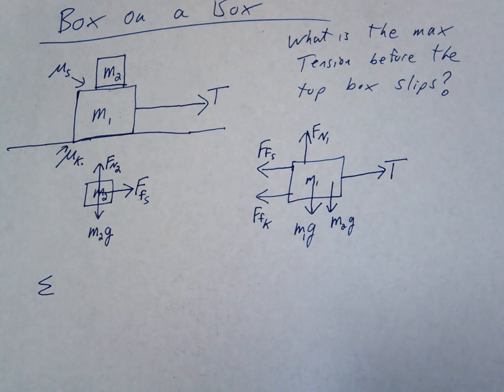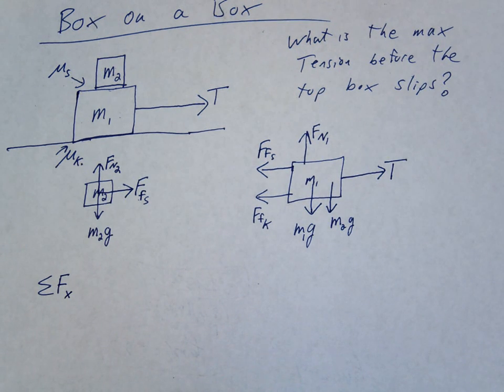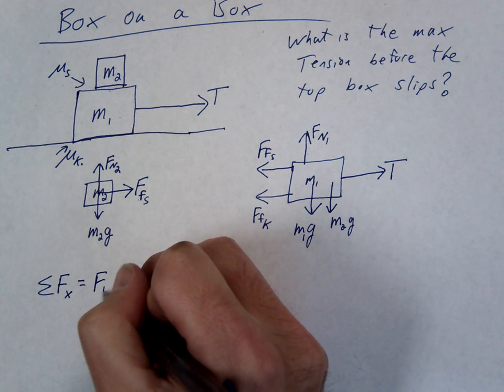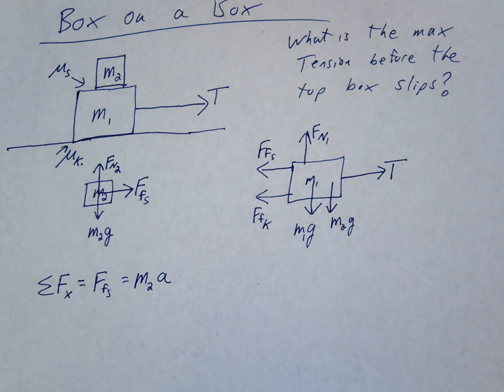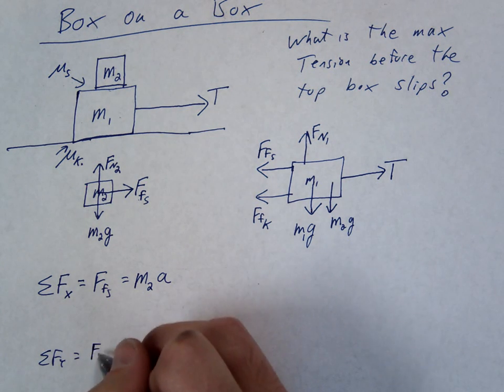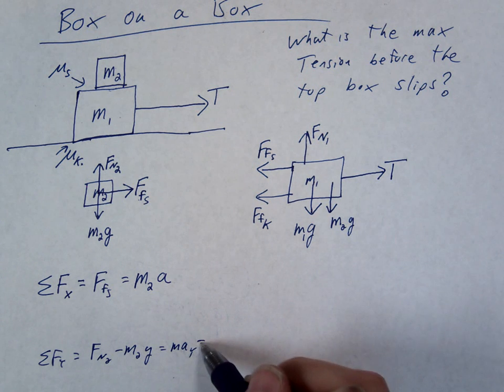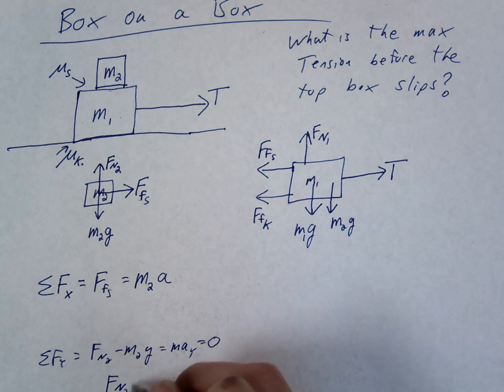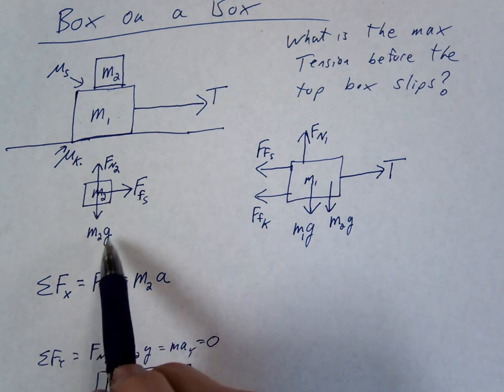Next step. We're going to do the equations for both blocks. So in the X, we're going to have FFS, static friction equals M2A. M2 is the thing accelerating. In the Y direction, we're going to have FN2 minus M2G equals MAY. But what do we know about that? It's zero. So hopefully this makes sense to you. At this point, you're getting this concept that this normal force on this little block is the same as gravity pulling down. Those two forces are equal to each other.